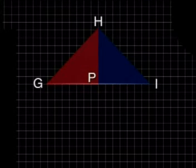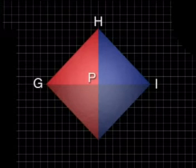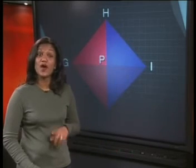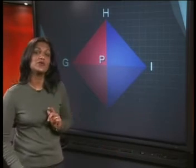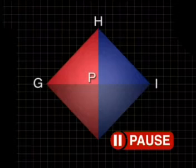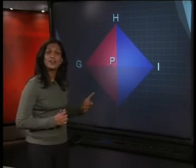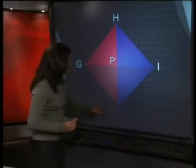Now let's see what happens if we reflect the large triangle GHI using GPI as the mirror line or line of symmetry. Do you recognize this shape? I'm sure you can see that it's a square. By reflecting a right-angled isosceles triangle twice, we have created a square. Let's see if we can work out the properties of a square using this diagram. We'll start by labeling our new point J.